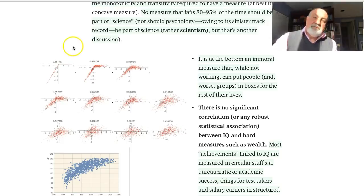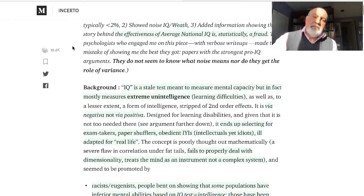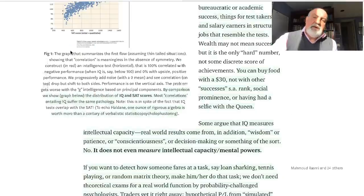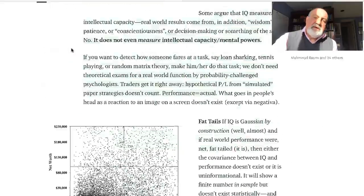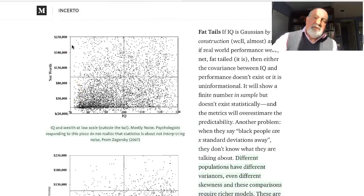Another intuition that you can see here very easily: take something like this—this is wealth—and you can see wealth and the so-called measure of IQ. You can easily see in that corner here that IQ doesn't translate to wealth.